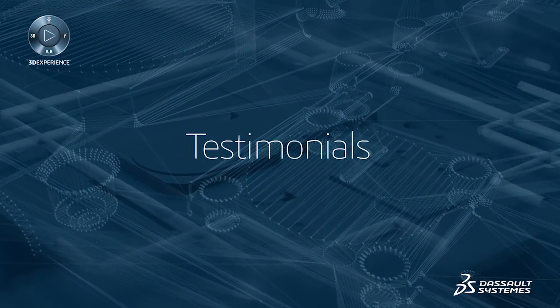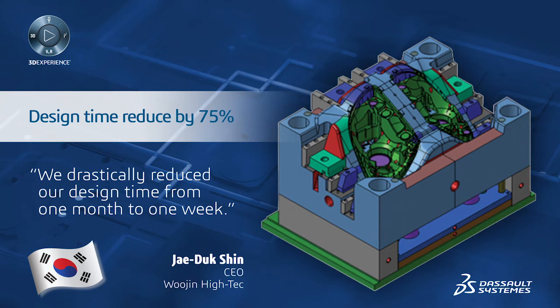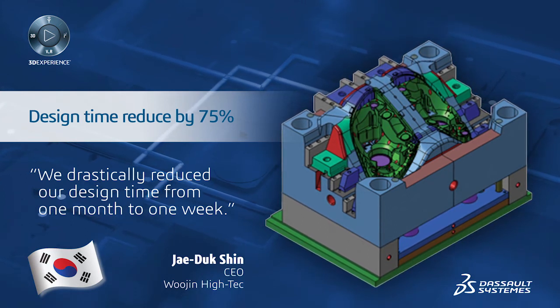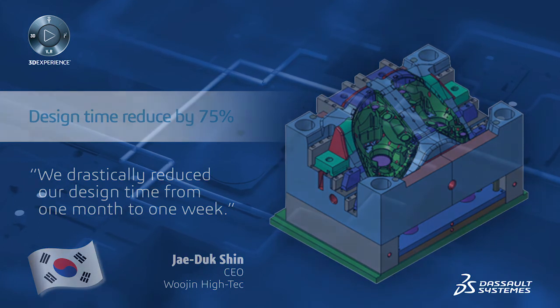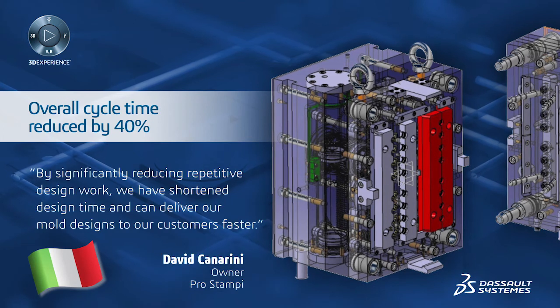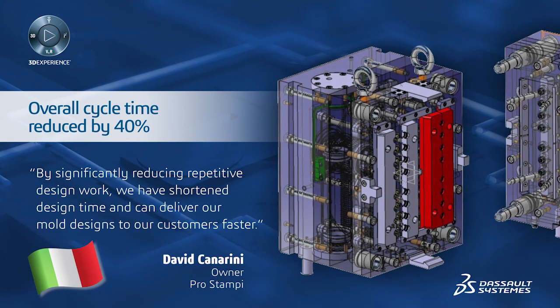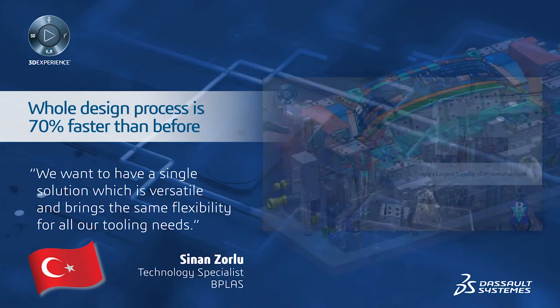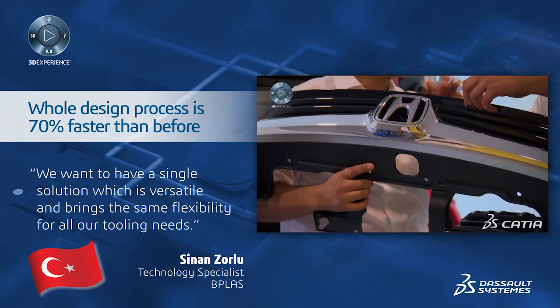Here are some of the business benefits that real users have achieved by using this solution. Korea's Wojin High Tech Company, which designs and manufactures plastic and die cast molds for automotive manufacturers, managed to drastically reduce their mold design time from one month to just one week through CATIA's integrated design process coverage. ProStampi, a mold and die design services company for the automotive and consumer goods industries, cut their overall design cycle time by 40%. And BPLAS, a plastic injection molding company based in Turkey, reduced their entire mold design process by 70% using the fully integrated CATIA mold and tool design solution.